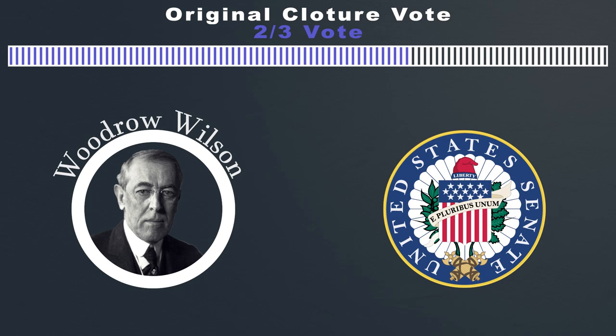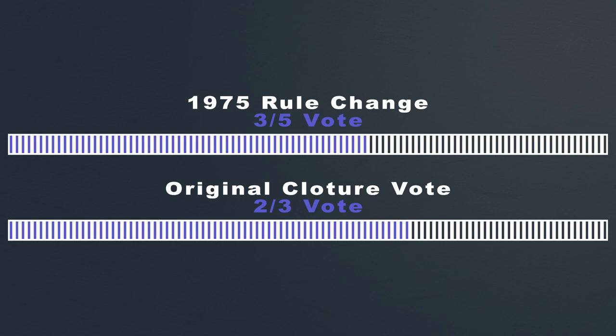Over the years, however, the use of the filibuster only continued to rise. In 1975, the Senate changed its rules again, so that in order to end the filibuster, the Senate would need to vote three-fifths of senators in favor of cloture.